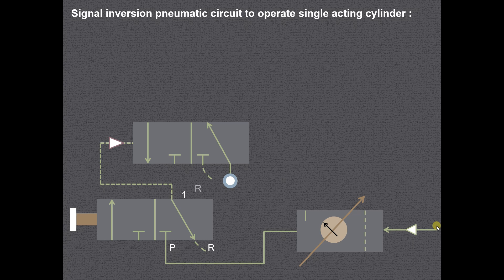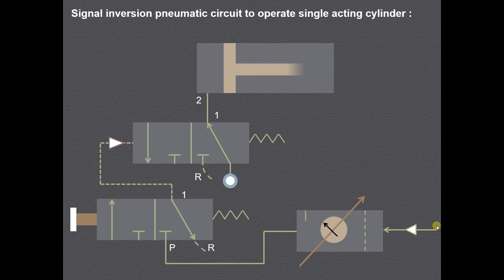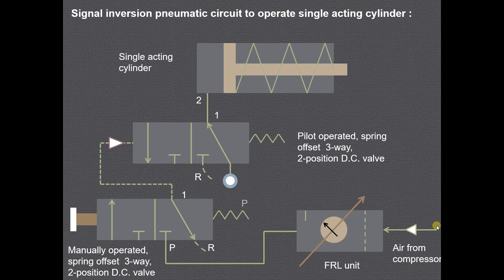There are two direction control valves used in this circuit, and those are used to operate the single acting pneumatic cylinder. Air from the compressor first enters into the FRL unit — that is the filter, regulator, and lubricator unit — then it enters into the manually operated spring offset three way two position direction control valve. The three ports are P, R, and 1: pressure port, reservoir port, and port 1 which connects to the cylinder of the valve.